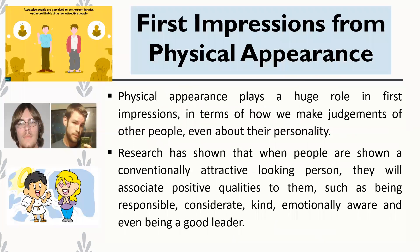Person perception is also influenced by physical appearance. As humans, we do look at superficial things like appearance — and this is not only about how someone looks physically, but also how you present yourself. For example, one man might be dressed very neatly whereas another is wearing flip flops and shabby clothes. Research has shown that when people are shown a conventionally attractive-looking person, they will associate positive qualities to them.